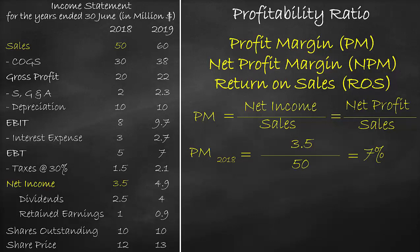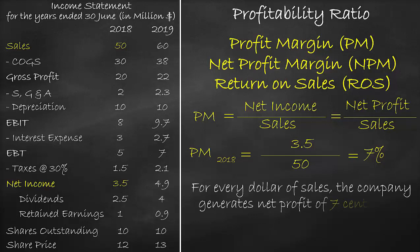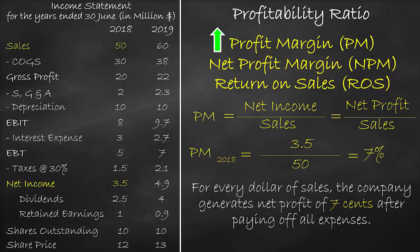The unit of profit margin, or return on sales, is a percentage. This means that for every dollar of sales, the company generates a net profit of $0.07 after paying off all expenses. For profitability ratios, the higher is generally the better.